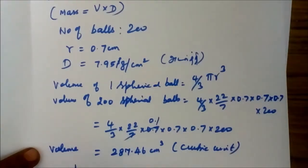If we ask the question, what is the density? Density of 1 cm³ is equal to 7.95 grams. That is, 1 cm³ equals 7.95 grams.